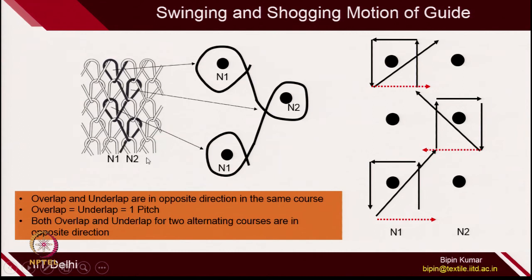Also, in terms of magnitude, the amount of overlap and underlap are in opposite directions in each course. The amount of overlap and underlap equals 1 pitch needle distance. Both overlap and underlap in alternating courses are different. So to describe this particular structure, I need to describe the overlap and underlap movements for up to 2 courses, because after 2 courses it is just repeating — the third loop repeats with the first loop.